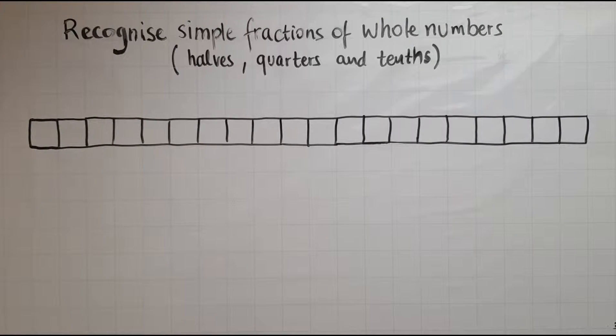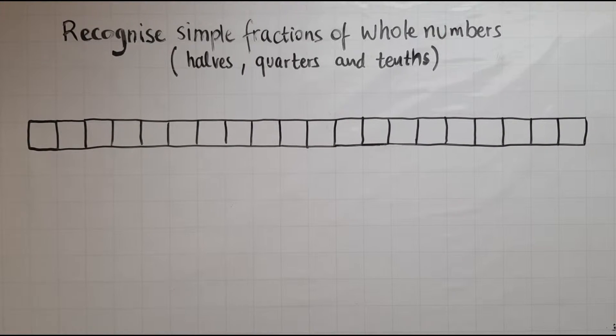In this video we'll be able to recognize simple fractions of whole numbers. Whole numbers are numbers like 1, 2, 3, 4, 5, 6, 15, 20. They're not decimals. They haven't got a decimal point. They're not 2.5 or 3.8. They're whole numbers like whole pounds: 1 pound without pence, 2 pounds, 8 pounds, 50 pounds and so on.